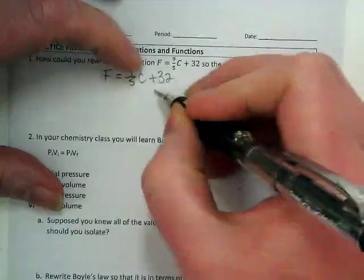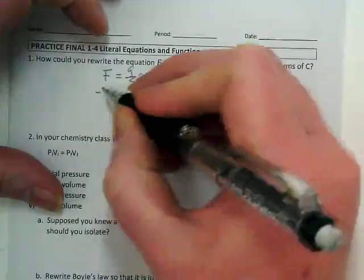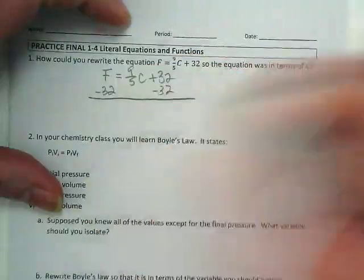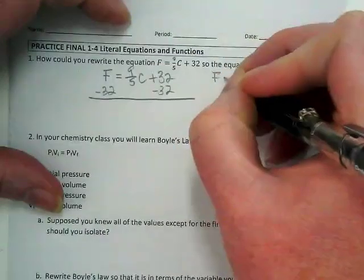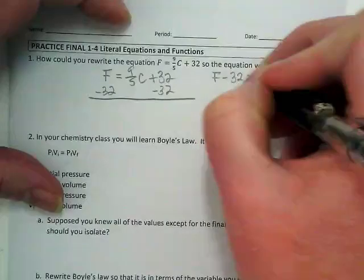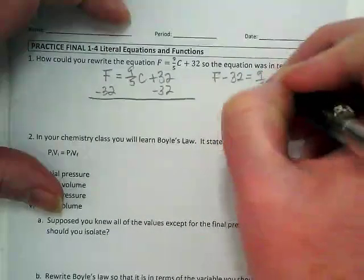If I want to solve for C, I'm going to get this 32 moved over. I'm going to rewrite it up here so I have some more space. F minus 32 is equal to 9 fifths C.